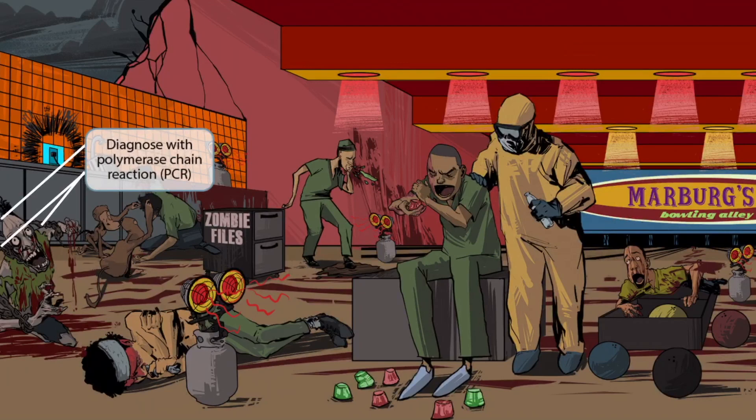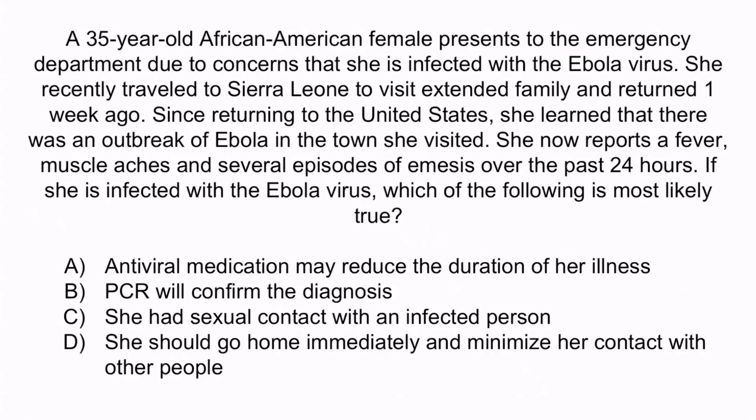Now let's do a question to apply what you've learned. A 35-year-old African-American female presents to the emergency department due to concerns that she is infected with the Ebola virus. She recently traveled to Sierra Leone to visit extended family and returned one week ago. Since returning to the United States, she learned there was an outbreak of Ebola in the town she visited. She now reports fever, muscle aches, and several episodes of emesis over the past 24 hours. If she is infected with the Ebola virus, which of the following is most likely true? A: Antiviral medication may reduce the duration of her illness. B: PCR will confirm the diagnosis. C: She had sexual contact with an infected person. Or D: She should go home immediately and minimize her contact with other people.